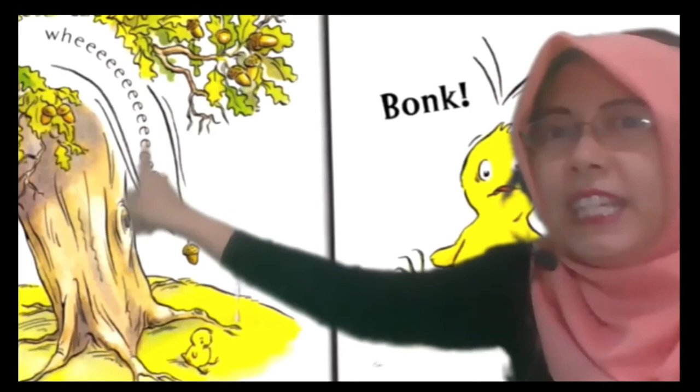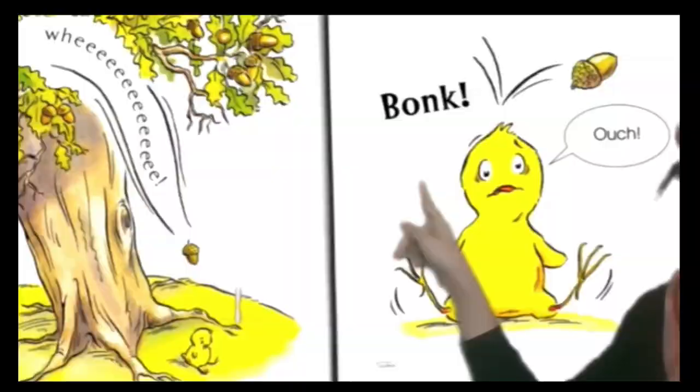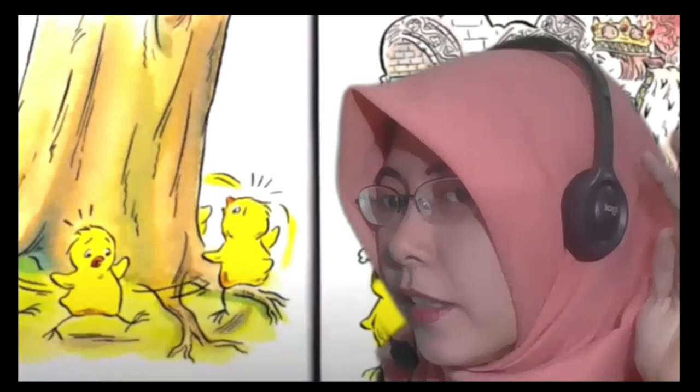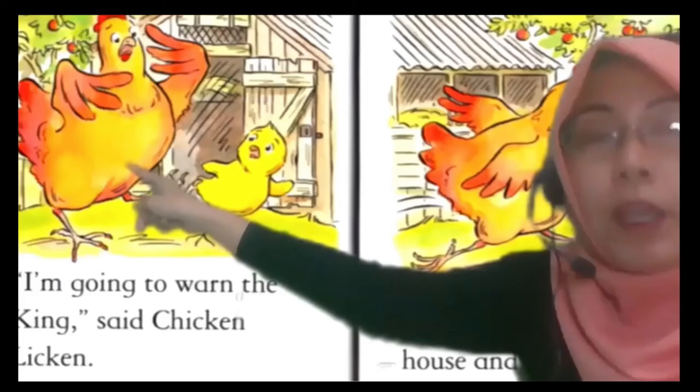Let's go. So one day an acorn fell down — boing! Chicken Licken didn't know what it was, so she got scared. 'Help me, help me, the sky is falling!' Can you say that together? 'The sky is falling!' Okay, can you say that? 'The sky is falling!'